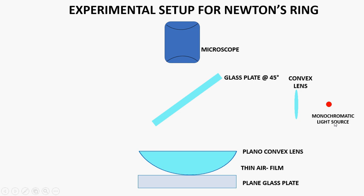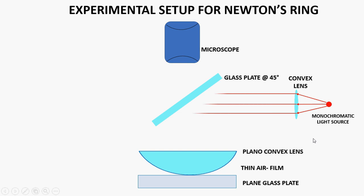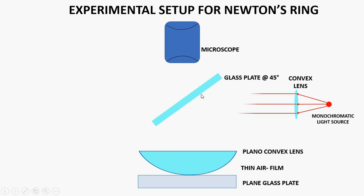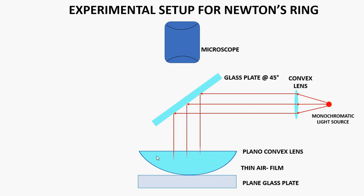The monochromatic light source emits light in all possible directions. Therefore we need a convex lens, and the source is placed at the focus of this convex lens. Light from the focus, after passing through the convex lens, becomes parallel. When this parallel light hits the 45-degree glass plate, it is reflected downward at 90 degrees — that is, normally incident — onto the plano-convex lens surface.